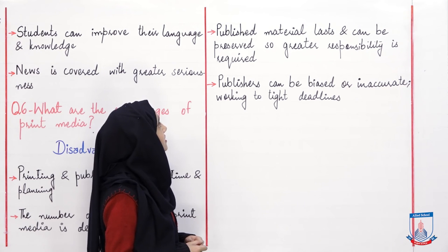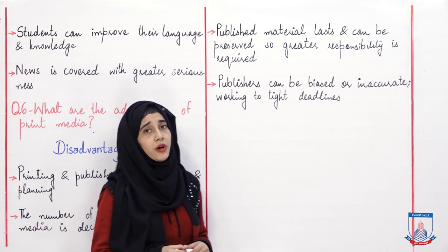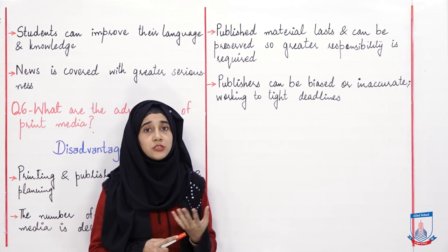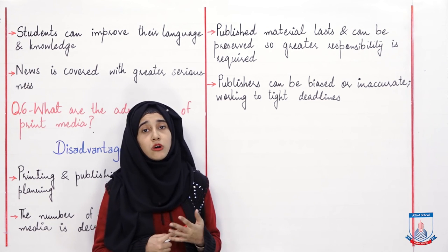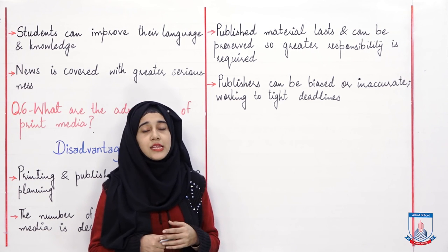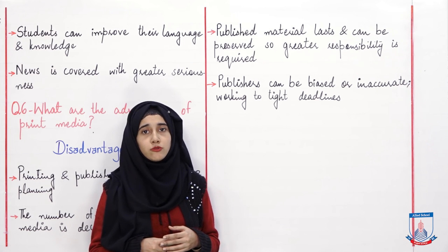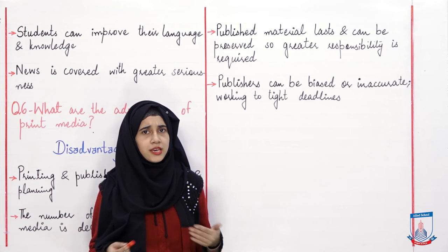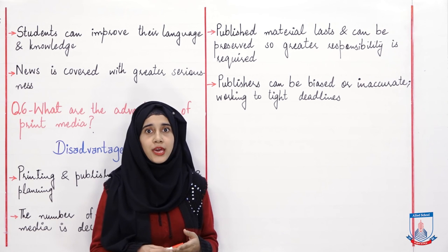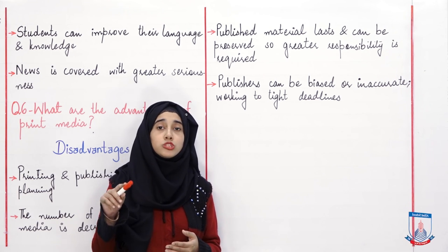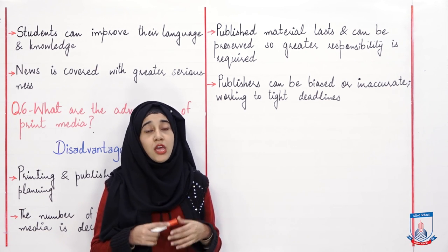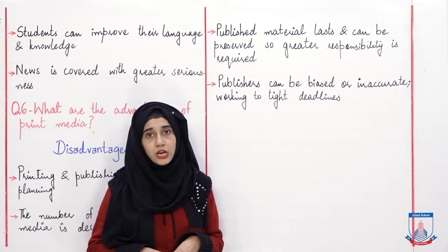Published material lasts and can be preserved, so greater responsibility is required — and this is also a disadvantage. If a news item is preserved, it may be correct or incorrect, but it can be used as evidence. Unlike electronic media where something seen on TV is forgotten, in print media a published news item can be kept, shown to others at any time, and if it contains an error, it can cause harm.